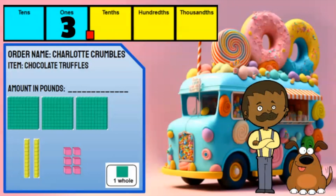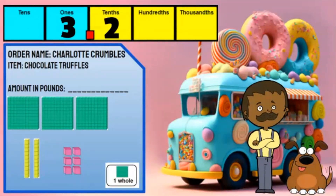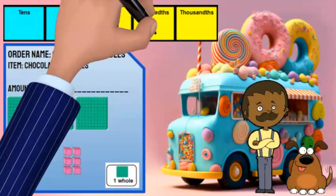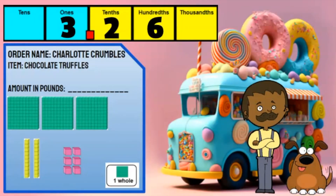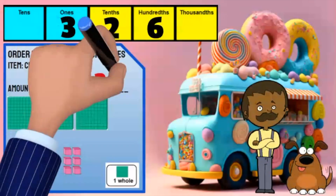Next, I know the rods represent tenths. There are two rods, so there needs to be a two in the tenths place. Finally, the units represent hundredths — I see there are six units, so I know the digit six belongs in the hundredths place. Charlotte Crumbles would like to order 3.26 hundredths of a pound of chocolate truffles.